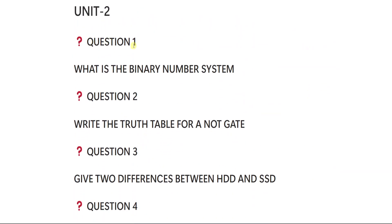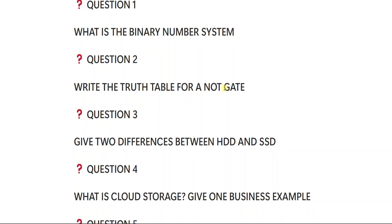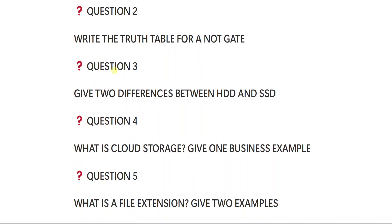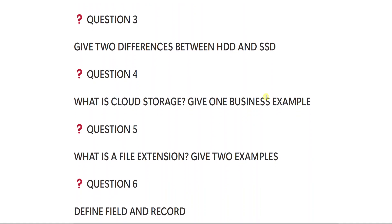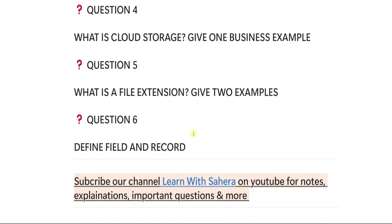From unit number two: one — what is the binary number system; two — write the truth table for a NOT gate; three — two differences between HDD and SSD; four — what is cloud storage, give one business example; five — what is a file extension, give two examples; six — define field and record. Those are the six important questions from unit two.